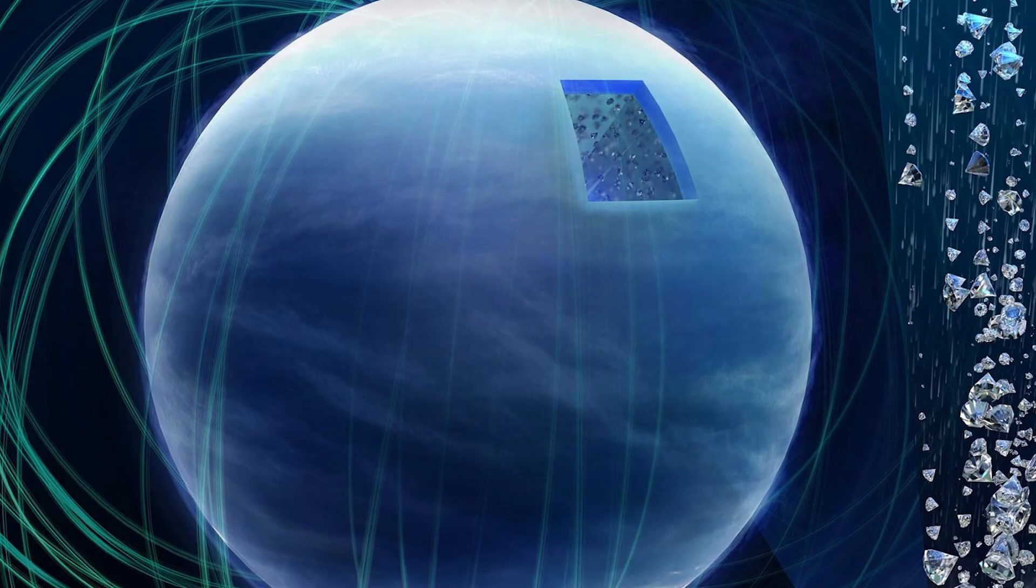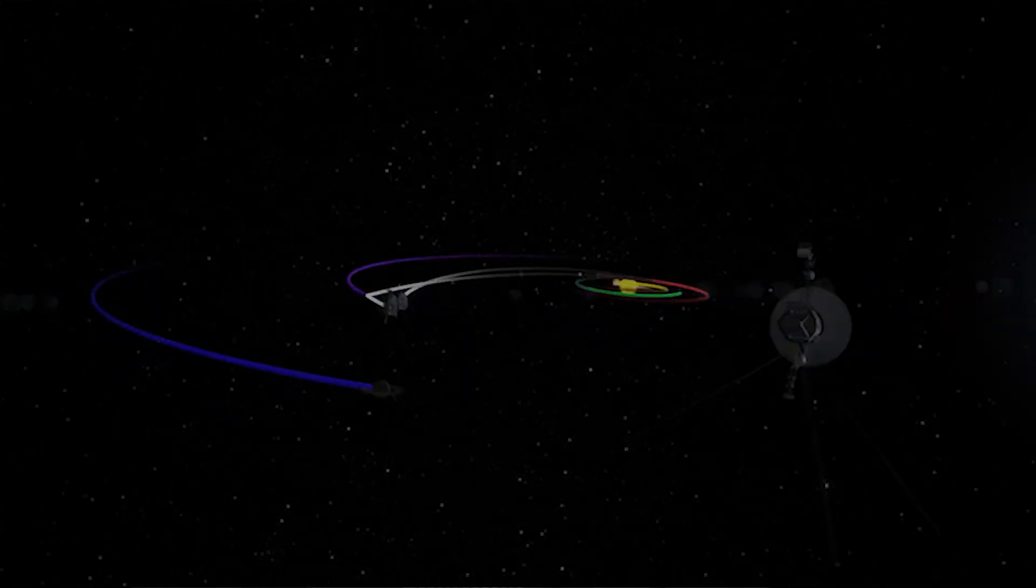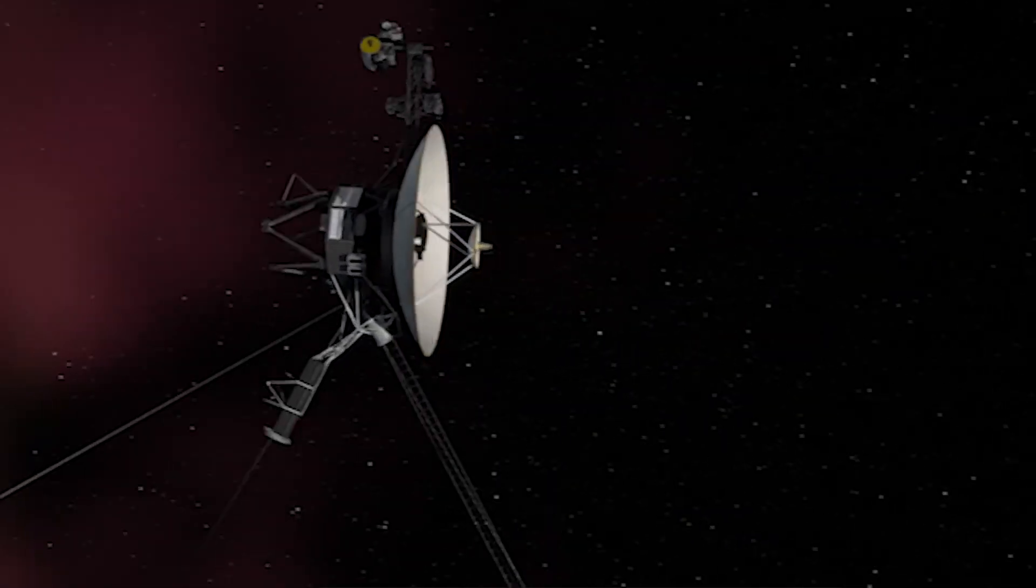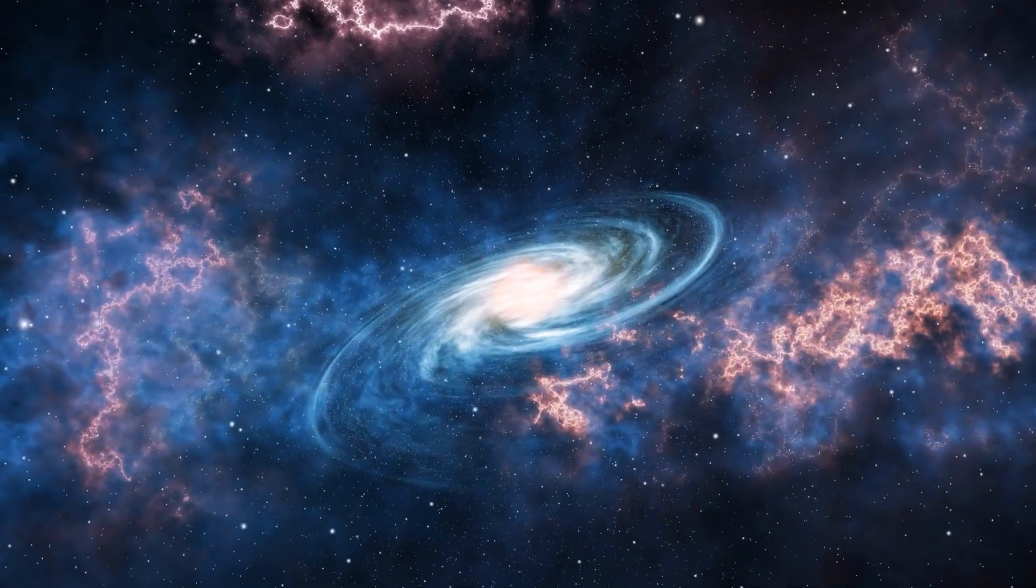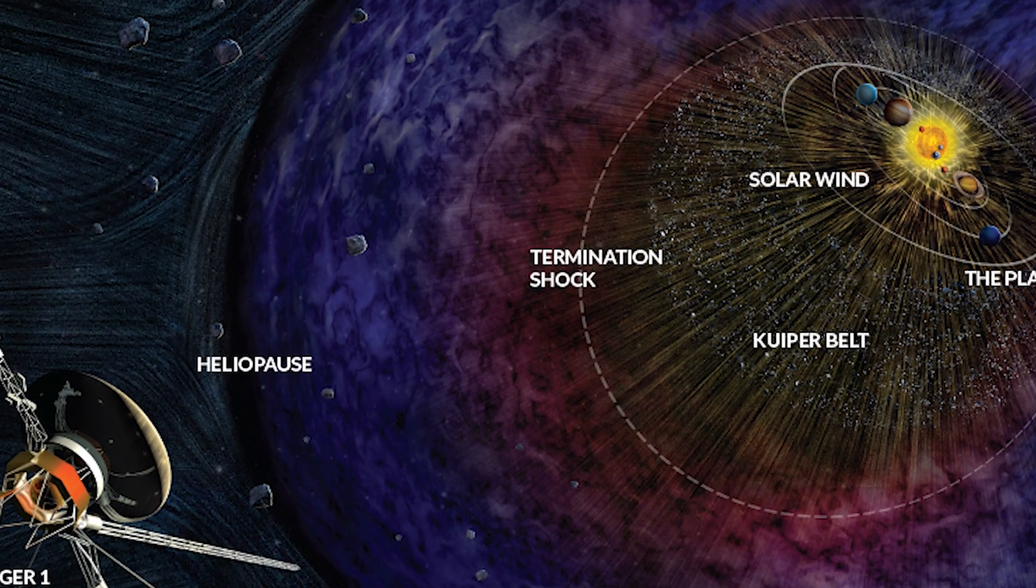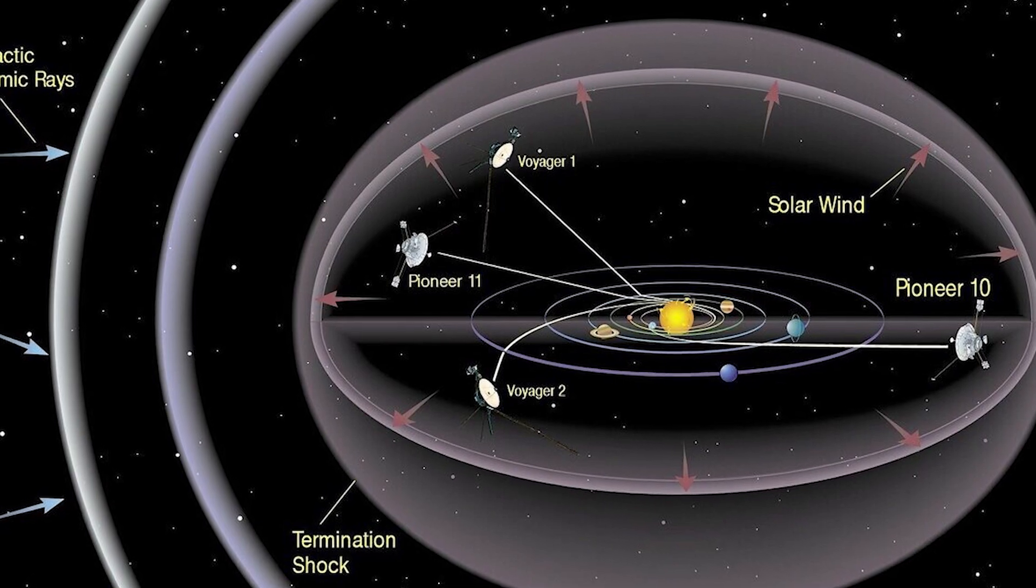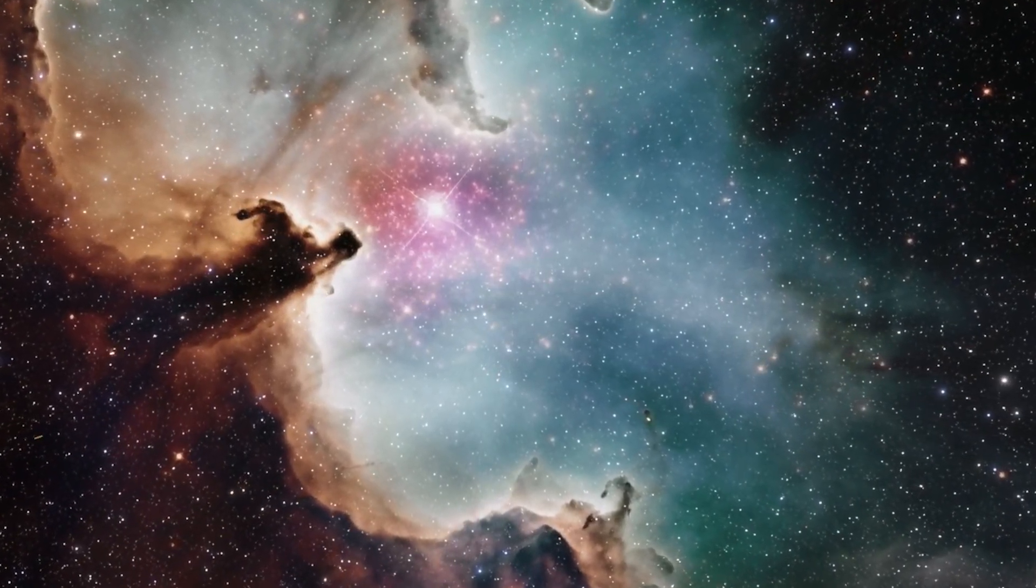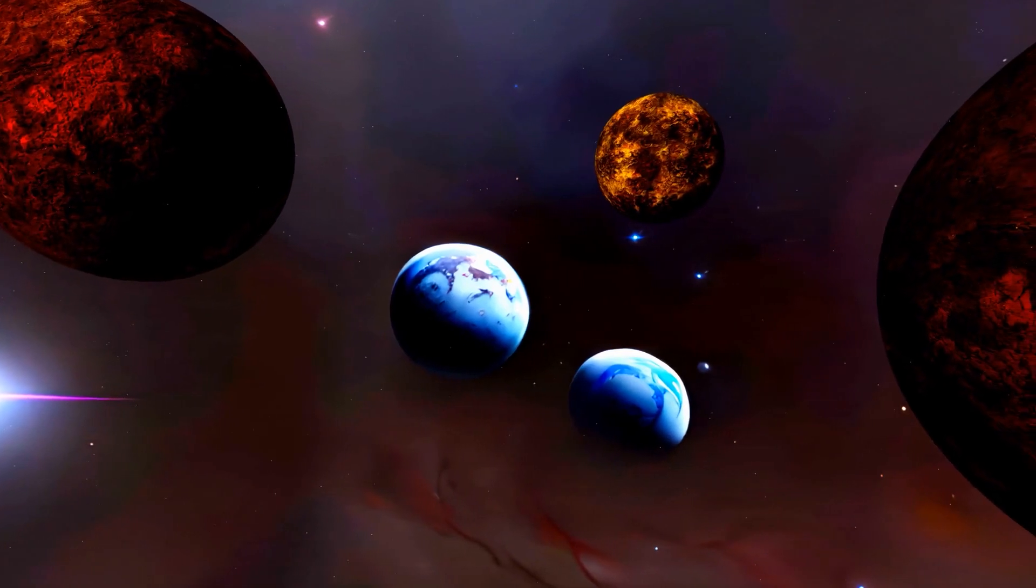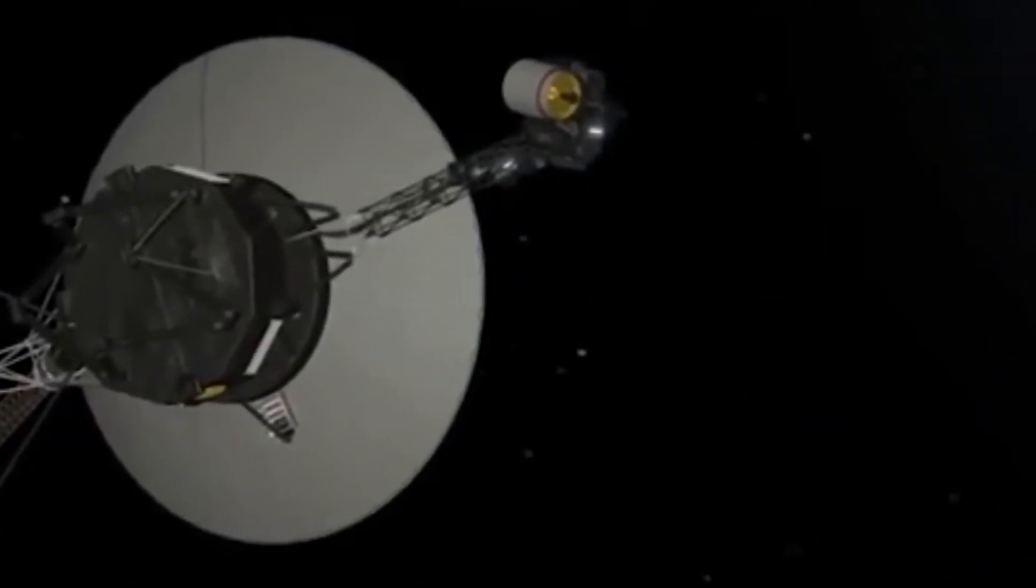Neptune's magnetic field gave scientists a whole new way to think about what's happening inside the planet. When the spacecraft passed the outer edges of the solar system, it entered a place where the sun's influence fades and space itself begins to change. It sent back important data from the farthest parts of our cosmic neighborhood, measuring invisible particles, magnetic forces, and the thin gas between stars. This helped expand what we know about where the solar wind stops and interstellar space begins.